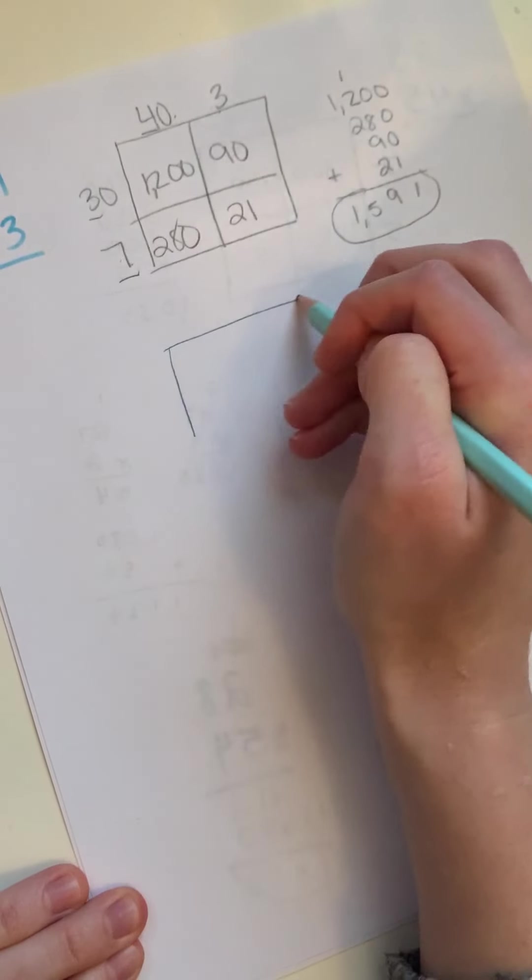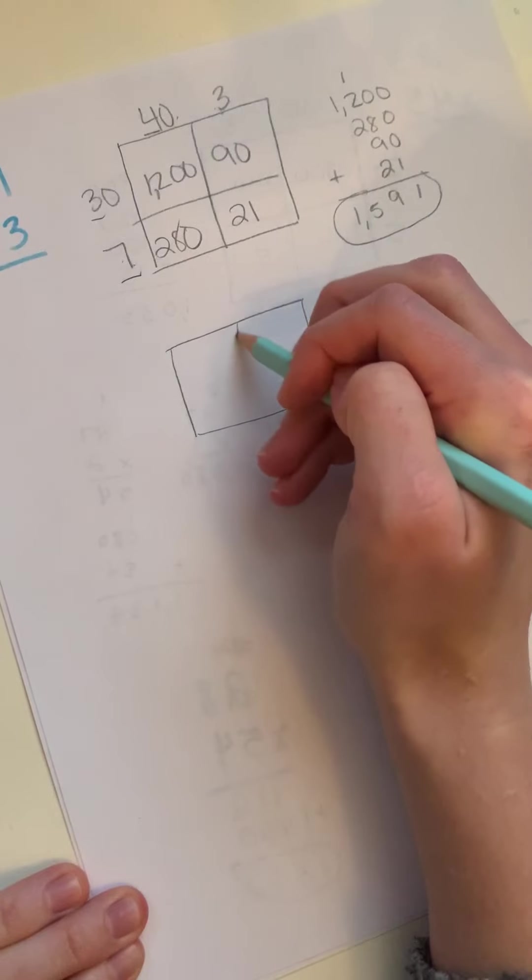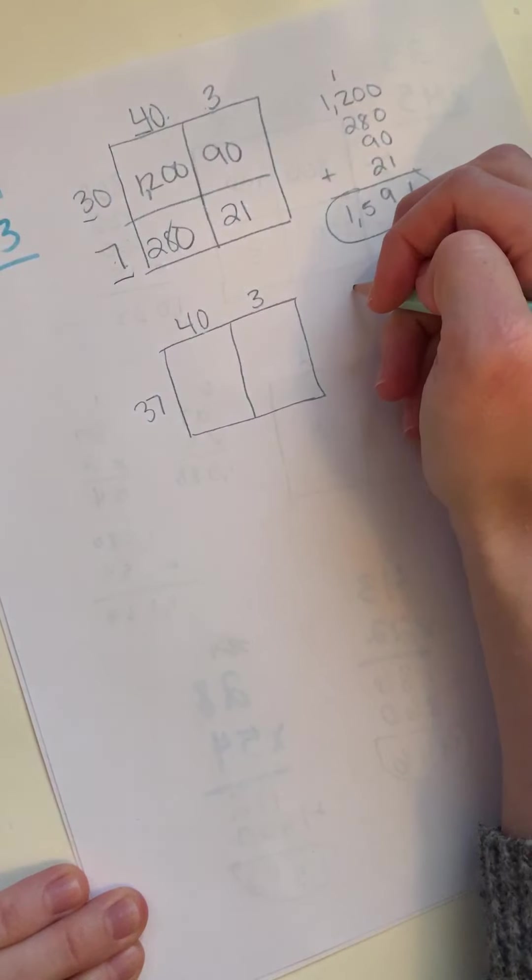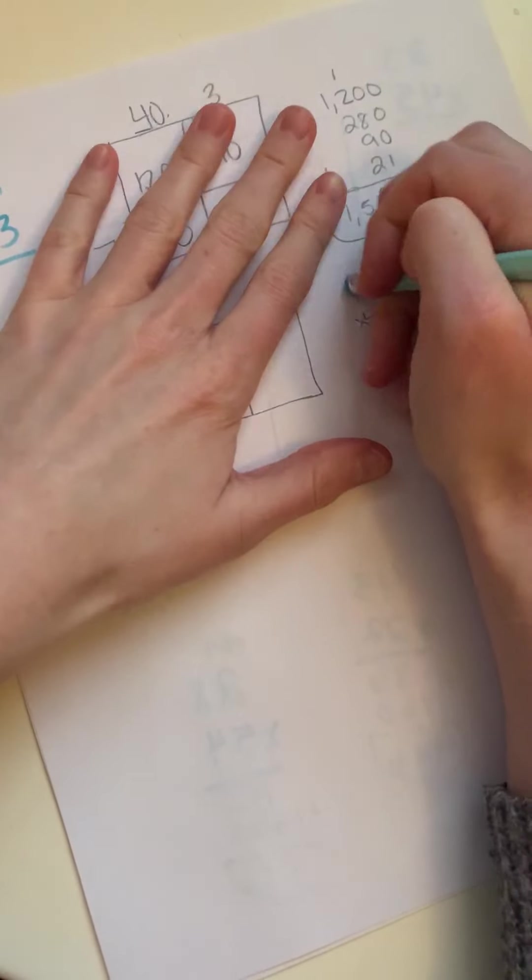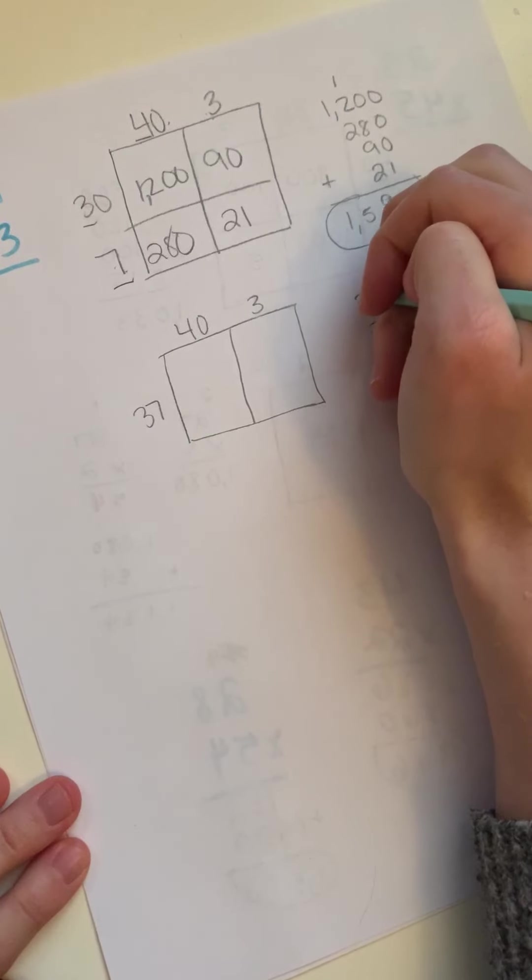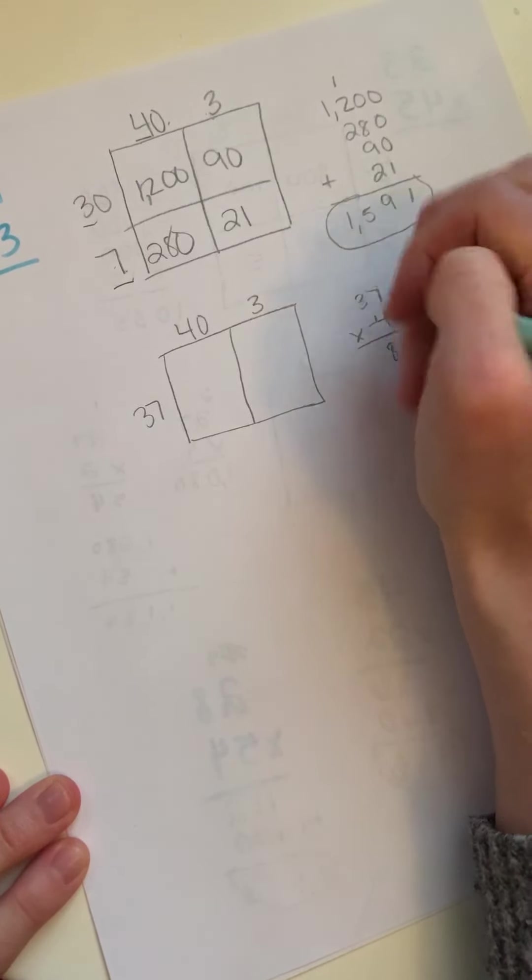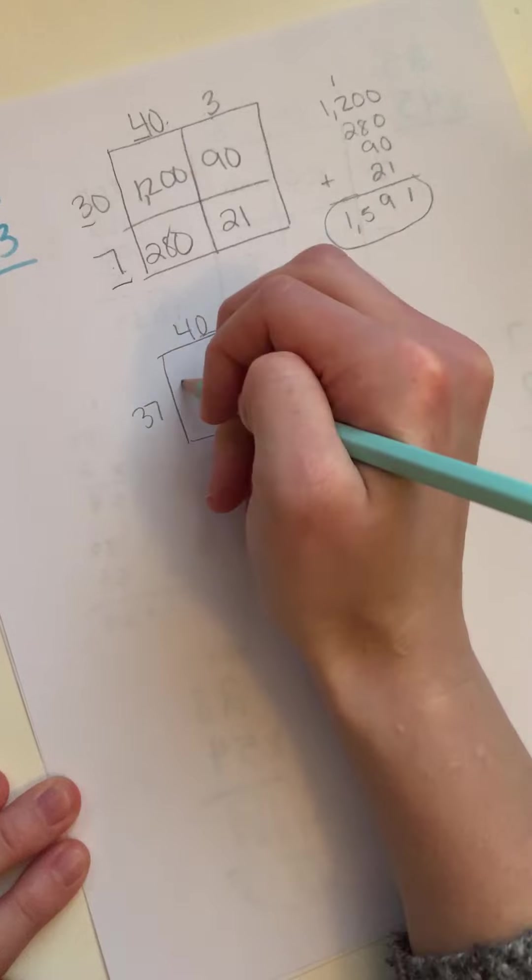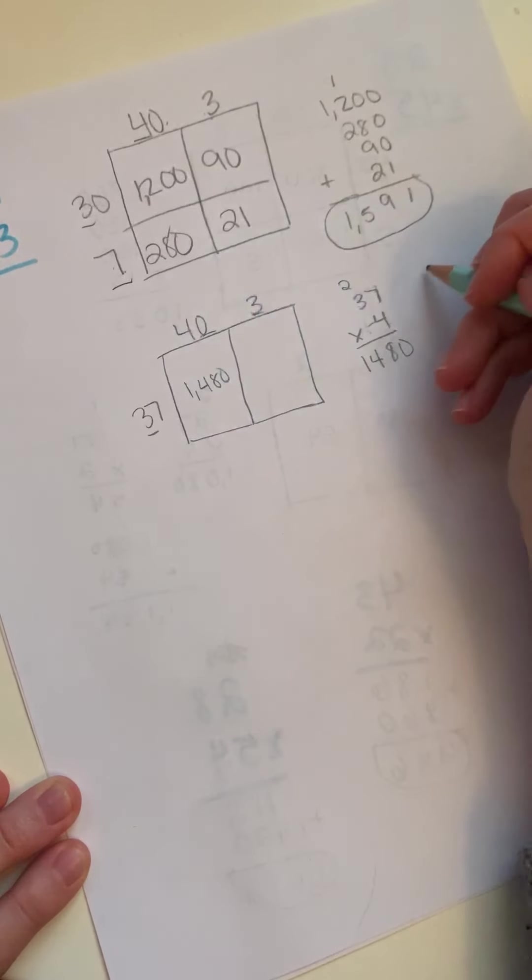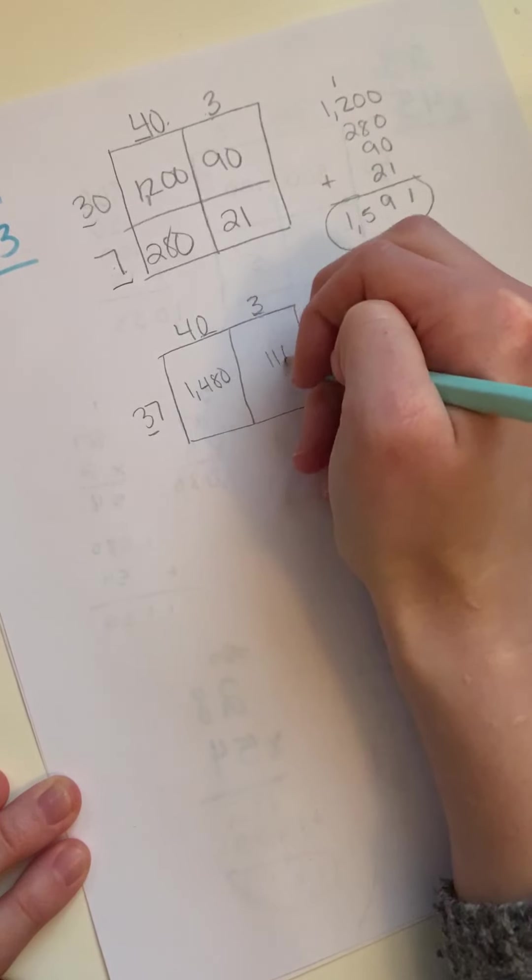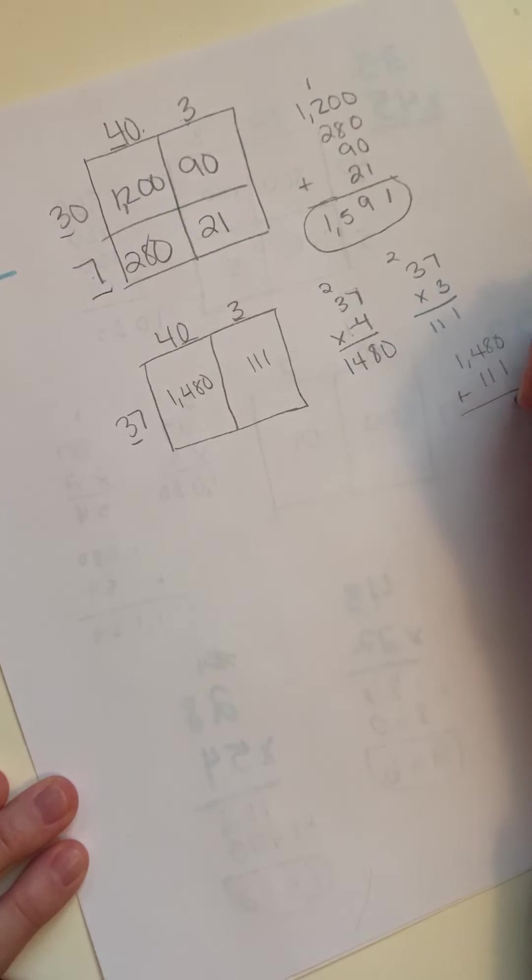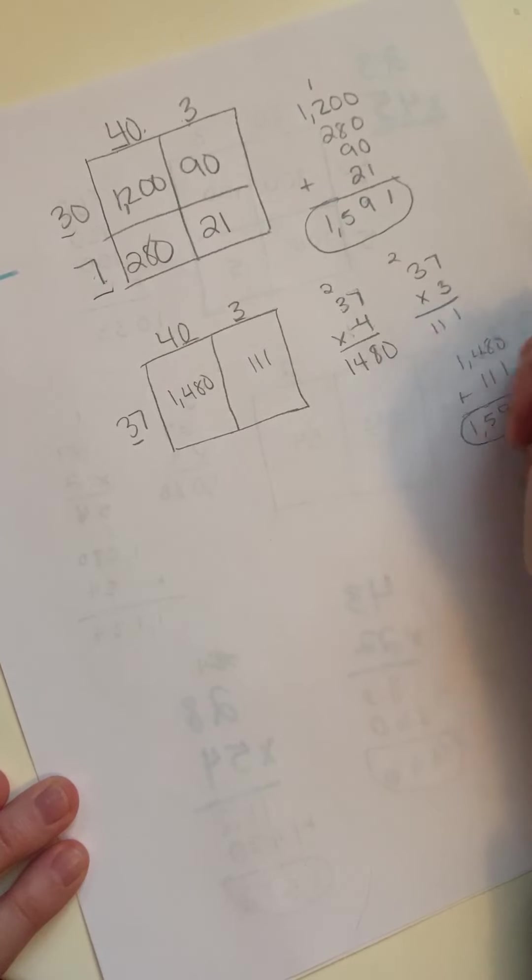Say we wanted to just split it into 2. 37 times 40 and 3. 37 times 4. 7 times 4 is 28. 3 times 4 is 12. Plus 2 more is 14. Tack on that 0. 1,480. 37 times 3. 21. 111. Now if any time I'm going too fast for you, you can always re-watch these videos. 1,591.